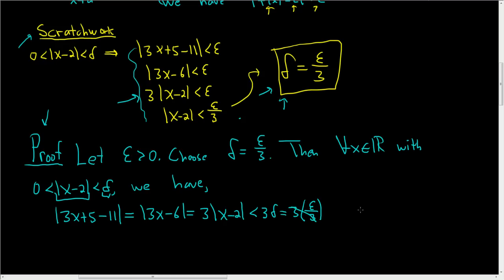Beautiful. The 3s cancel, and this is equal to epsilon. And that is the delta-epsilon proof. This is the easiest delta-epsilon proof you can do, but it's really good to master it.